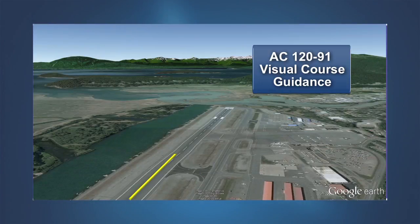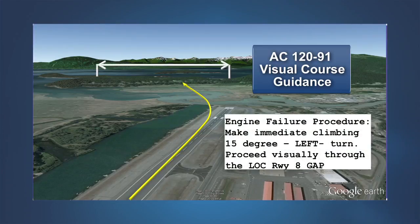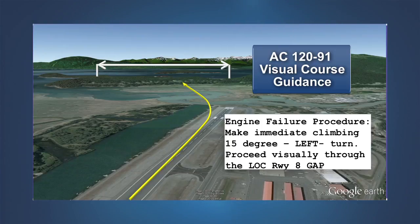The engine failure procedure for Aspen's runway 33 is based on the Lins standard instrument departure. The major difference is that turn points are expressed as geographical references instead of crossing altitudes. In addition, this procedure includes a holding pattern at Lins intersection that allows the airplane to climb to a safe altitude and reach the IFR en route structure. Another option provided in the AC uses visual guidance to avoid obstacles, but requires that specific procedures be provided to the flight crew along with any weather or lighting requirements necessary to maintain reference with the desired ground track.